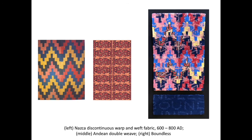The source images for Boundless are a stepped triangle pattern from a Nazca discontinuous warp and weft fabric, and a double-headed serpent motif from an Andean double weave. In Photoshop, the Nazca textile sits on top of the double-headed serpent, and the serpent bleeds through in specific value ranges of the Nazca textile.